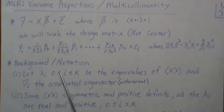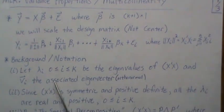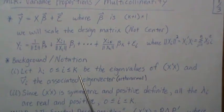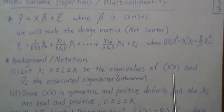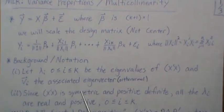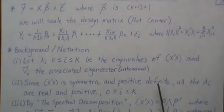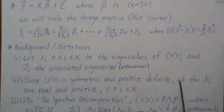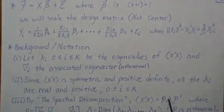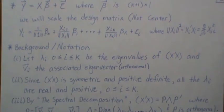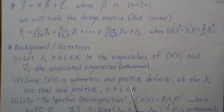A little background first. Let λᵢ be the eigenvalues of X'X and vᵢ be the associated orthonormal eigenvector corresponding to this matrix. Since X'X is symmetric and positive definite, all the λᵢ's are real and positive.